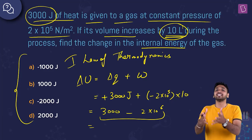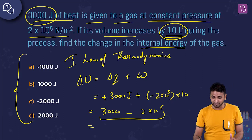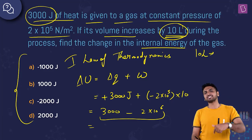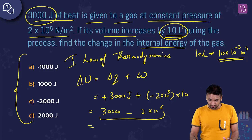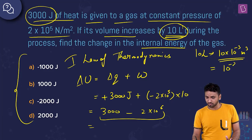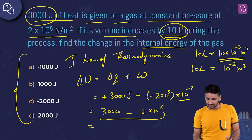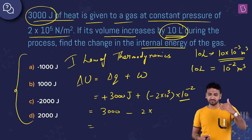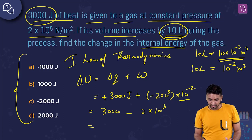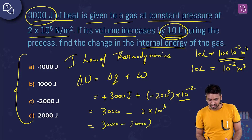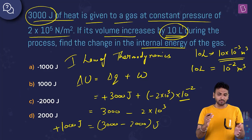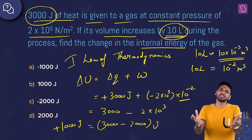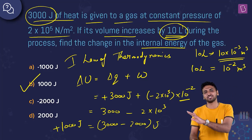One liter = 10⁻³ m³, so 10 liters = 10 × 10⁻³ = 10⁻² m³. Replacing 10 liters with 10⁻² m³: work done = −(2 × 10⁵) × (10⁻²) = −2000 J. Therefore, ΔU = 3000 − 2000 = +1000 J. Matching with the options, the answer is B: 1000 joules.